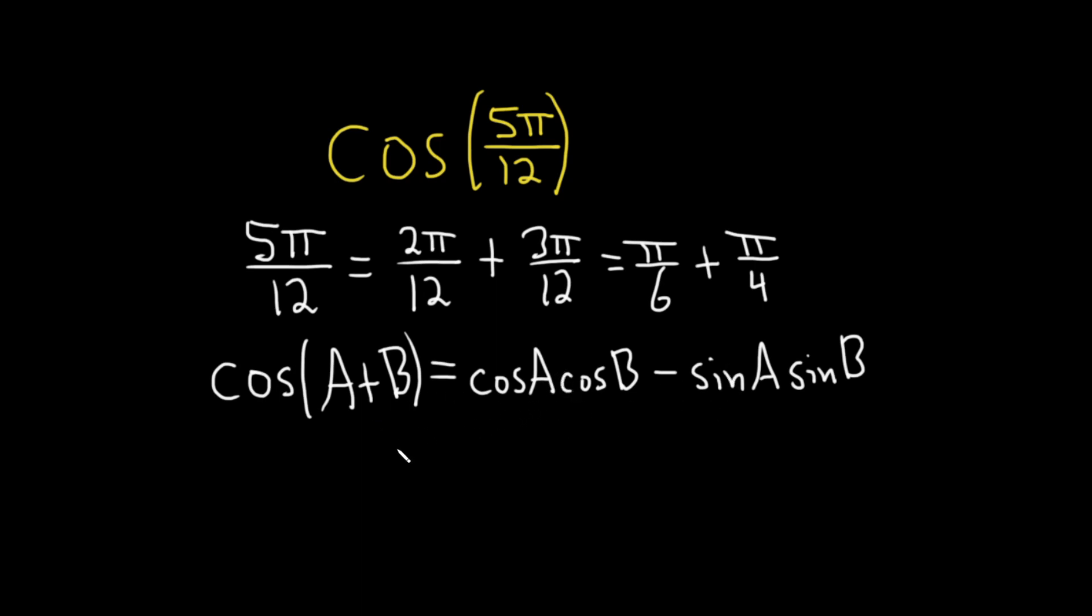So in our problem here, we have the cosine of 5π over 12. That's equal to the cosine of, let's see, our A is π over 6, so π over 6 plus, and our B is π over 4, so π over 4.